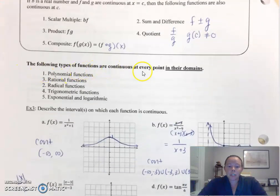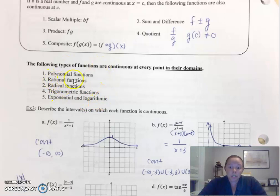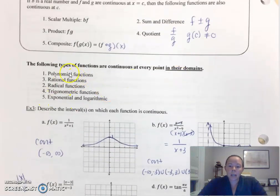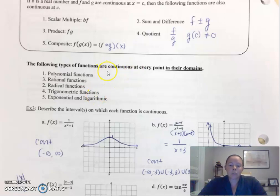The following types of functions are continuous at every point in their domains: polynomial, rational, radical, trigonometric, and exponential and logarithmic. All these functions, as long as you don't have the denominator equaling zero — or with your trigonometric functions, be careful with graphs like tangent. With radical functions, make sure you're within the domain and not getting a negative number under an even radical. These are accepted continuous functions, so if you get to something like this, you don't have to prove that it's continuous — that's accepted in the math world as common knowledge.